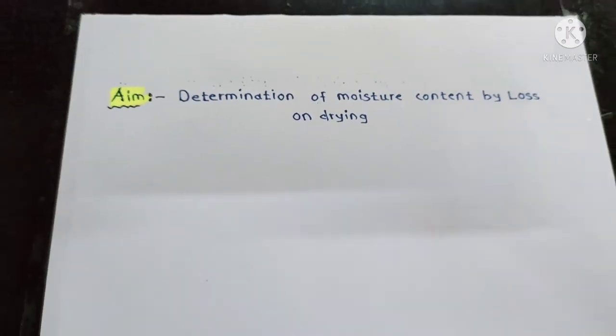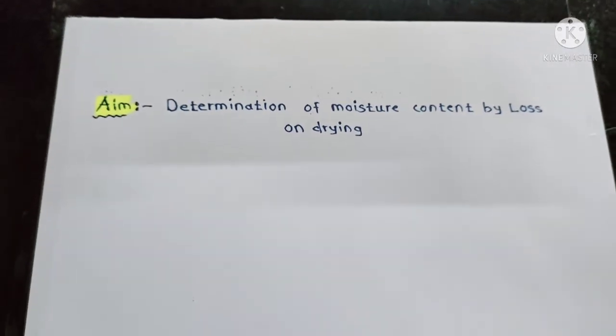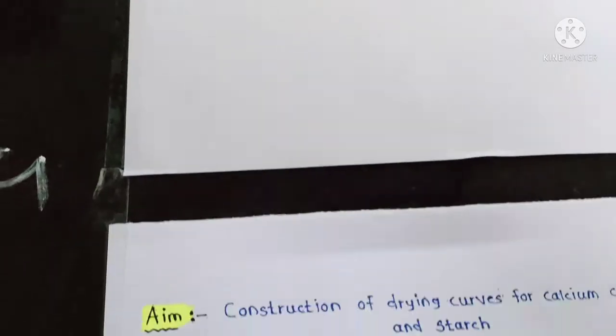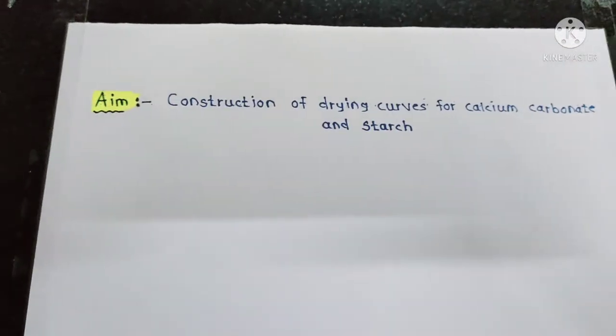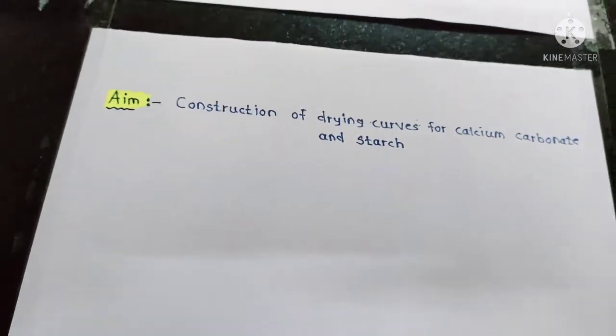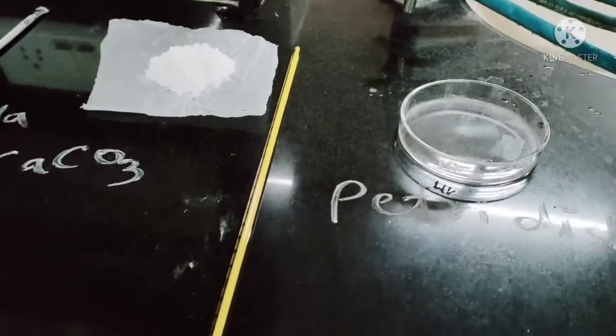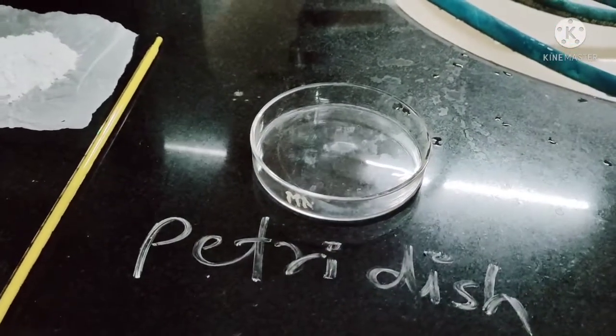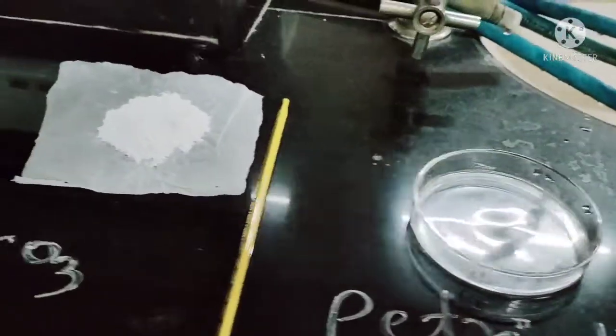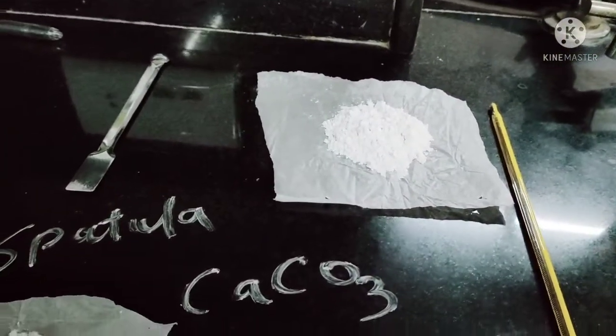The next practical is determination of moisture contained by loss on drying. The next one is construction of drying curve for calcium carbonate and starch. For this we require petri dish, chemical is calcium carbonate.